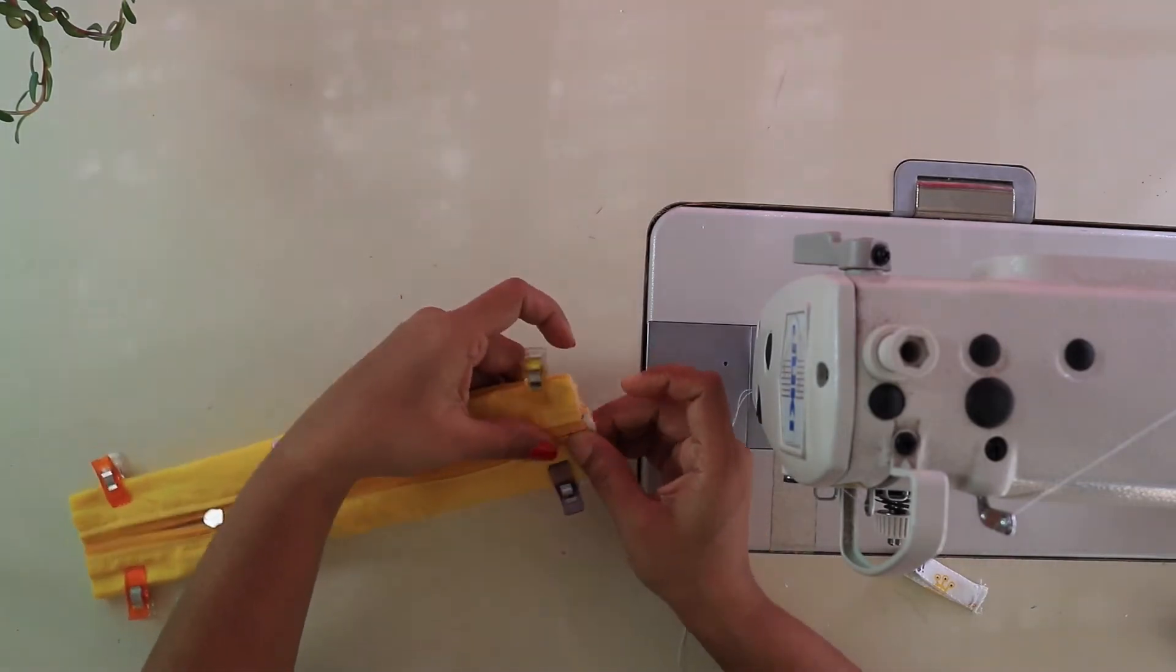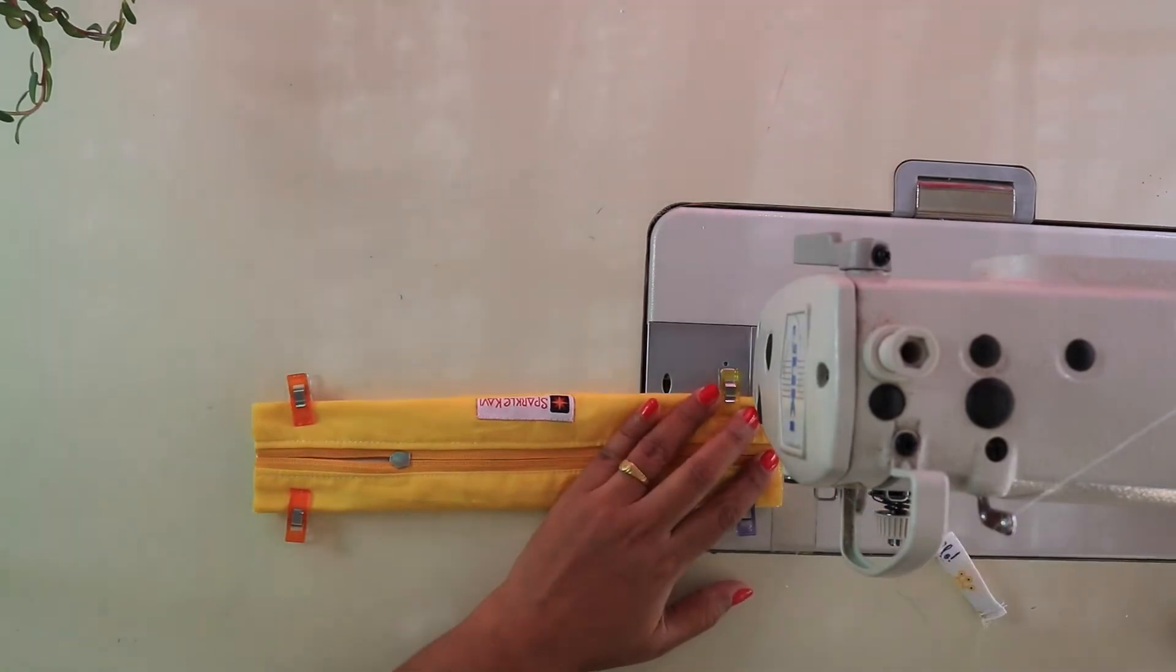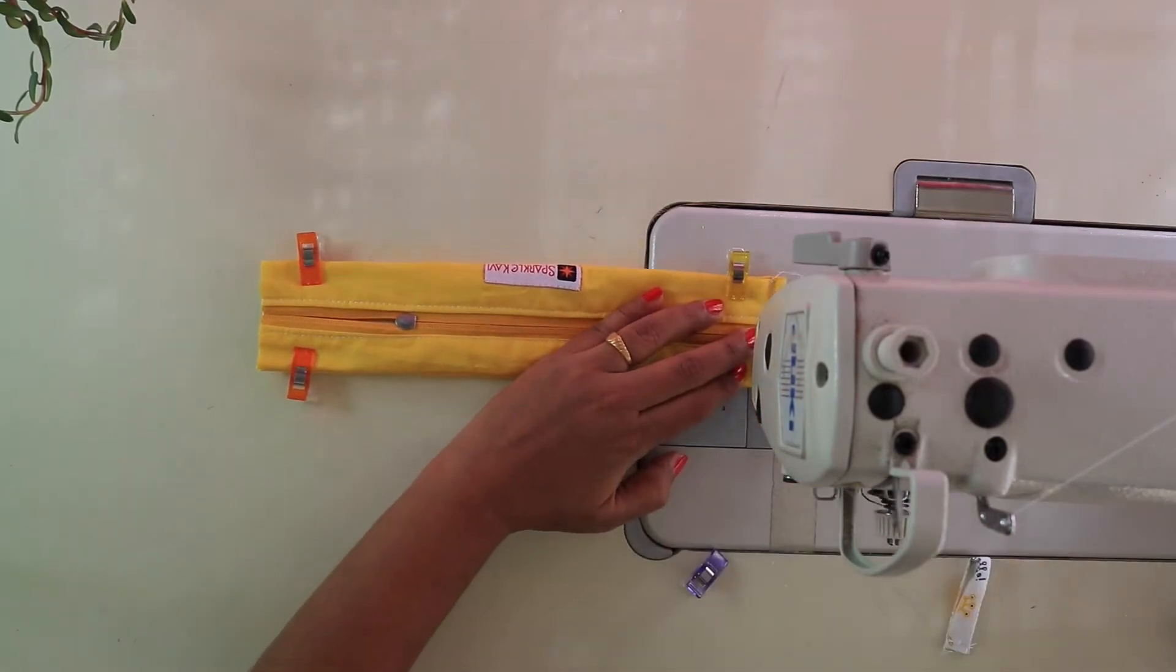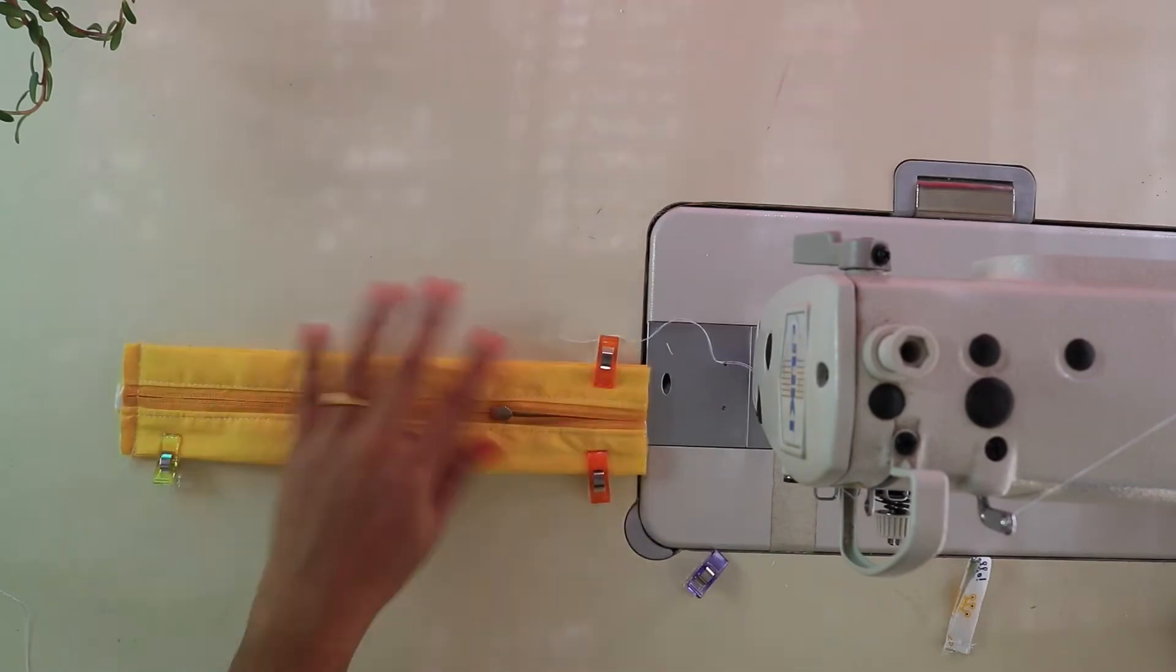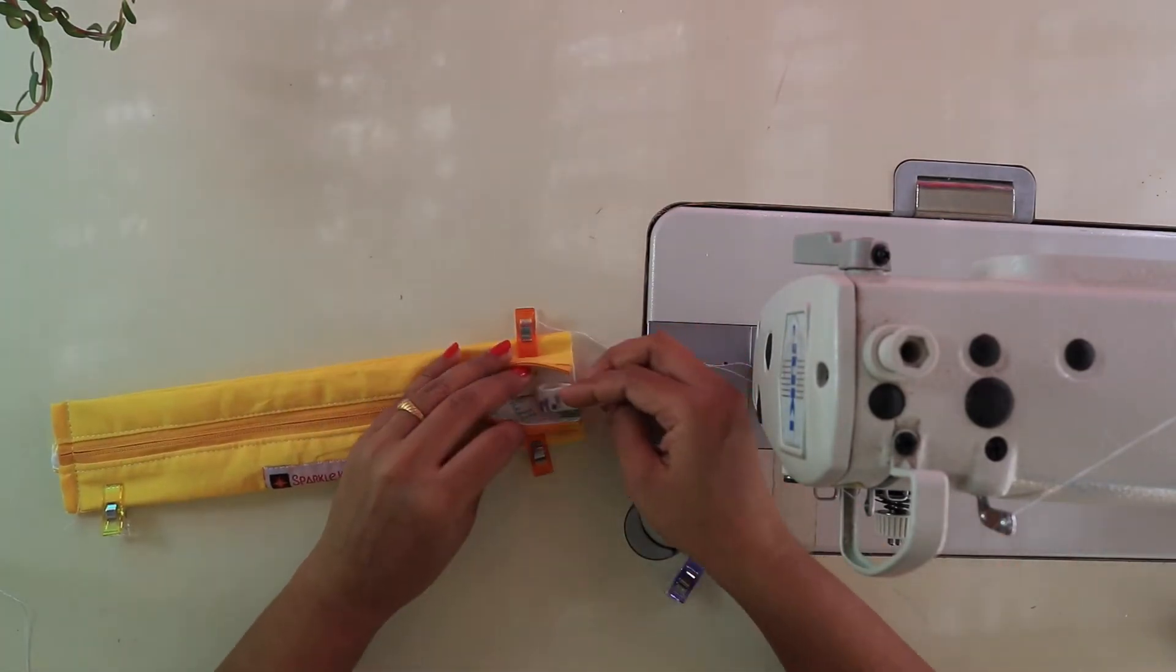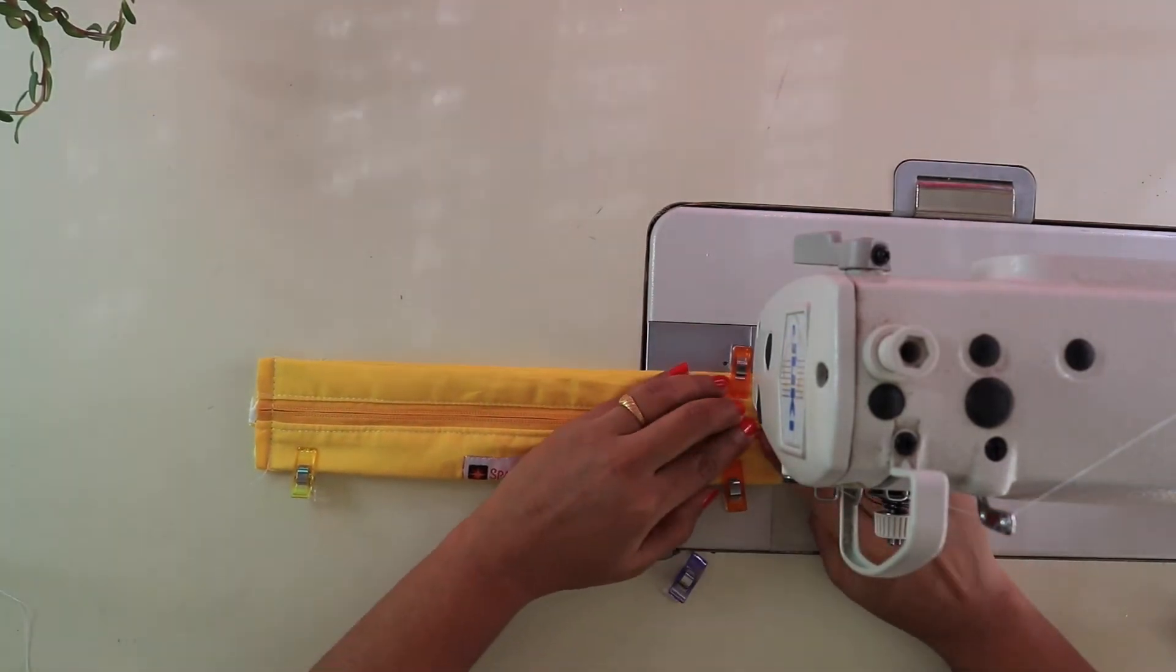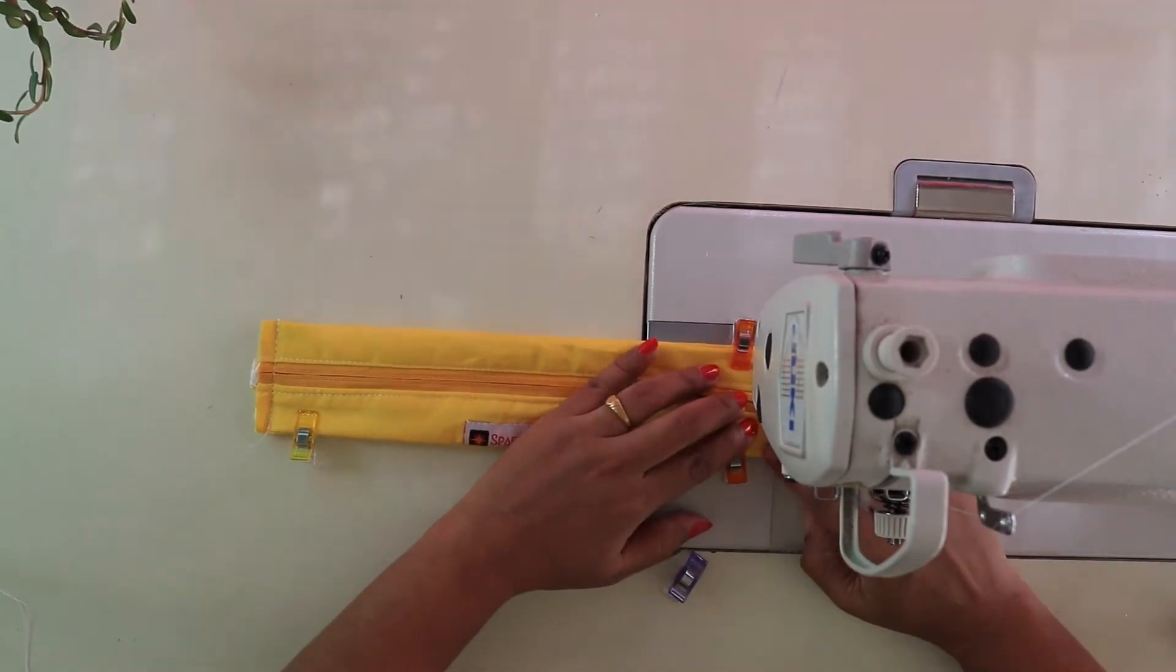And then, with quarter inch seam, make a stitch. Repeat the same for the opposite side also. If you want, you can definitely skip the side tabs, but side tabs really help to move the zipper pull easily.